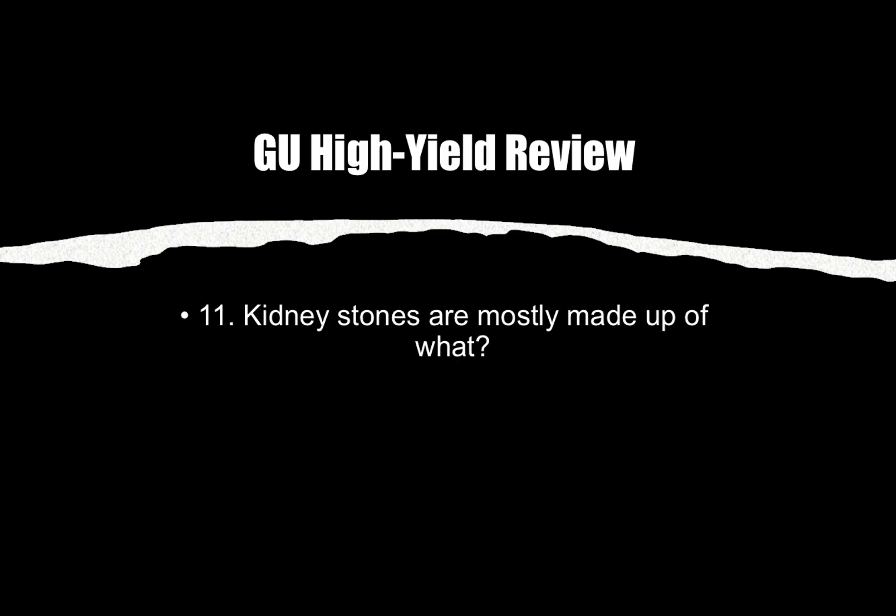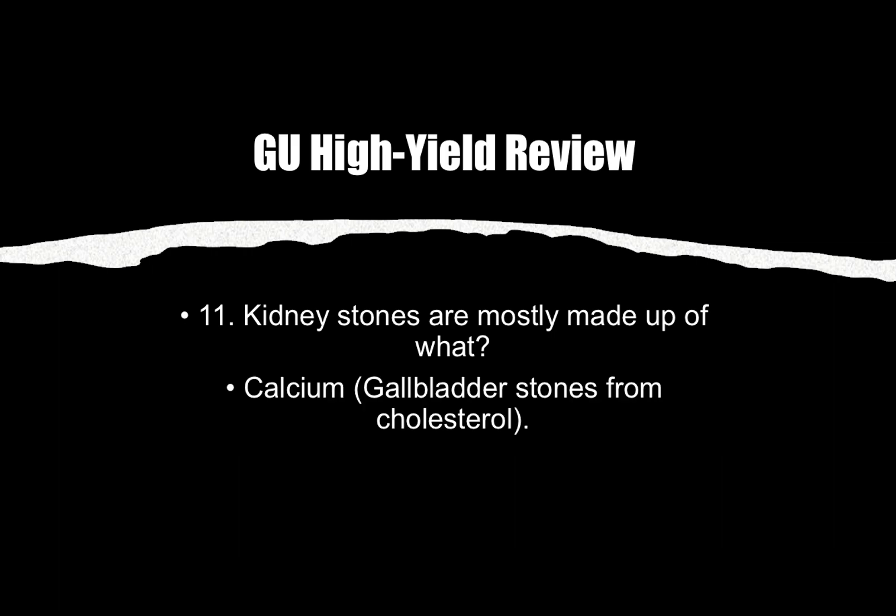Number eleven: Kidney stones are mostly made up of what? They're mostly made up of calcium, whereas gallbladder stones are made from cholesterol. So: calcium for kidney stones, cholesterol for gallbladder stones.